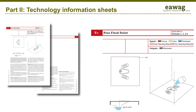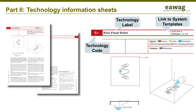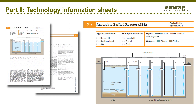The second part of the compendium — the technology information sheets — looks like this. At the top of the sheet, you always have the technology label, the technology code, the list of system templates it applies to, and the relevant input and output products for each technology. For functional groups two to five, we also feature the application level: is the technology best suitable or not suitable at household, neighborhood, or city level? And what is the best management level — household, shared, or public facility?